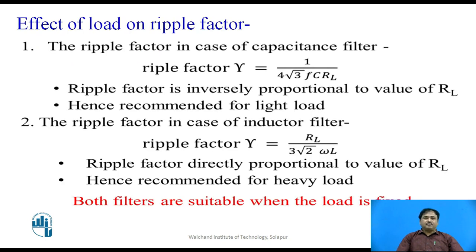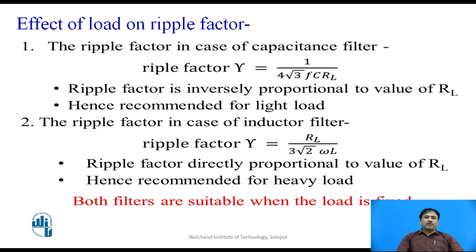We already know about the filter that uses capacitance, and the ripple factor of that filter is given by 1 upon 4√3·f·C·RL, which confirms that the value of ripple is inversely proportional to the value of load. That's why we say this filter is recommended for circuits in which the value of RL is very high — that is, it is called a light load.